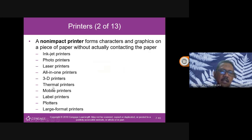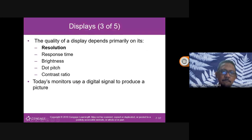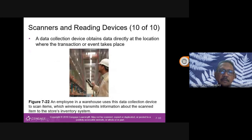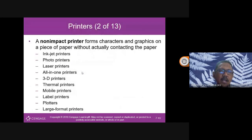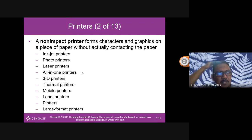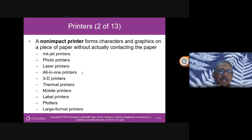A thermal printer uses heat-sensitive paper. It's often used for receipts — like the TNB bill I mentioned. One disadvantage of thermal printers is that the print fades over time, especially with heat or cold. Receipts from petrol stations, for example, are printed with thermal printers and can fade after 2-3 years, leaving a blank page.